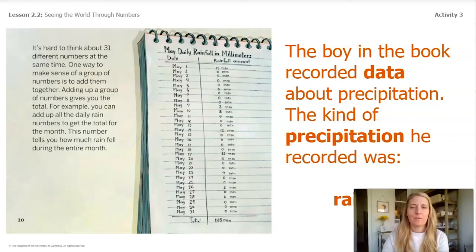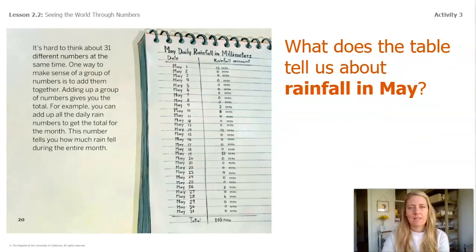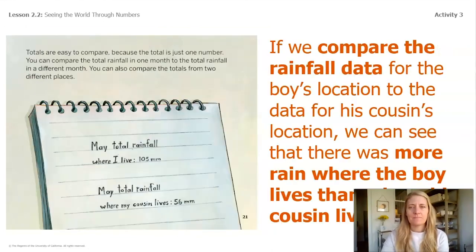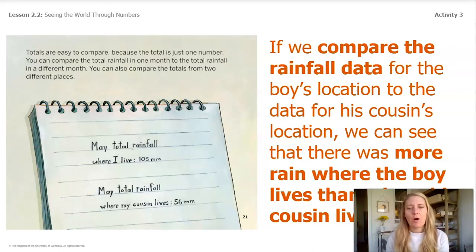Now, the boy in the book recorded data about precipitation — specifically rainfall. But what does the data table tell us about rainfall in May? Notice the boy did not use a line plot to organize his rainfall data. Instead, he kept a total for every day and then added them all up at the end. If we compare the rainfall data for the boy's location to the data for his cousin's location, we can see that there was more rain where the boy lives than where his cousin lives. By adding up all of the millimeters for every day and comparing the rainfall data, we can see that there was more rain where the boy lives than where his cousin lives.